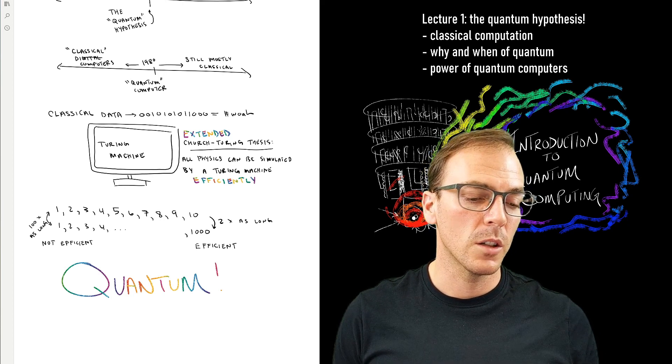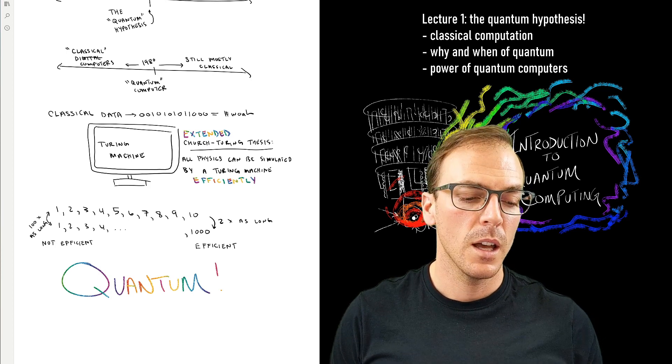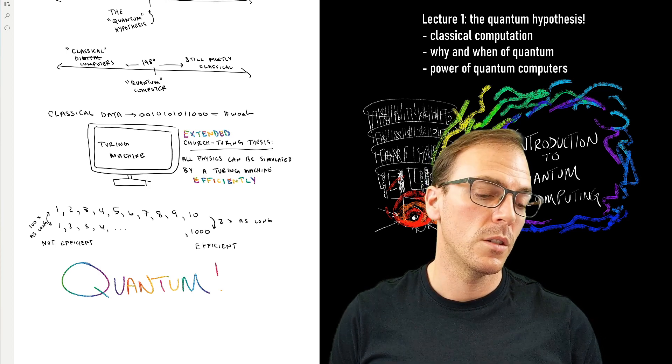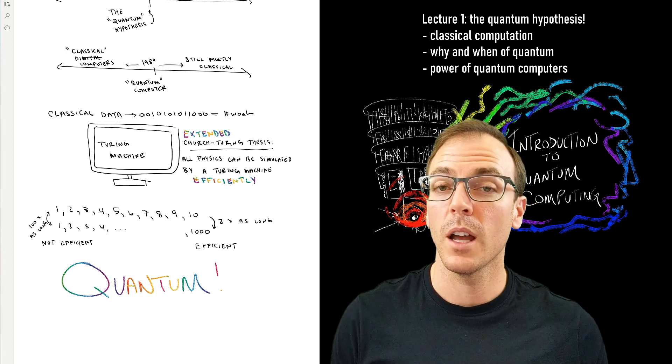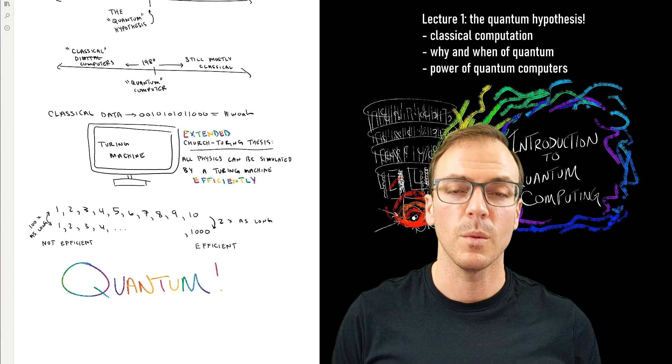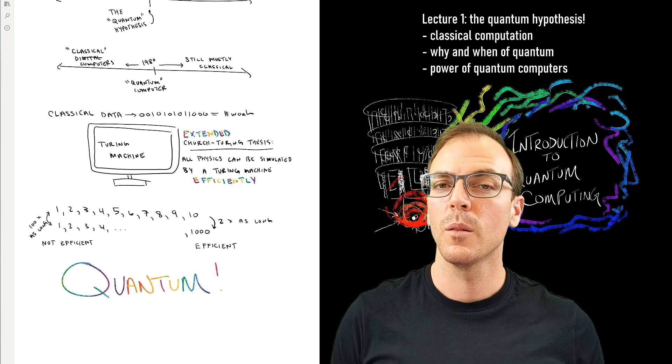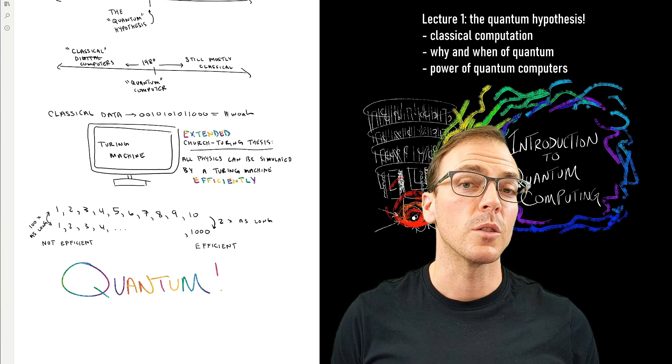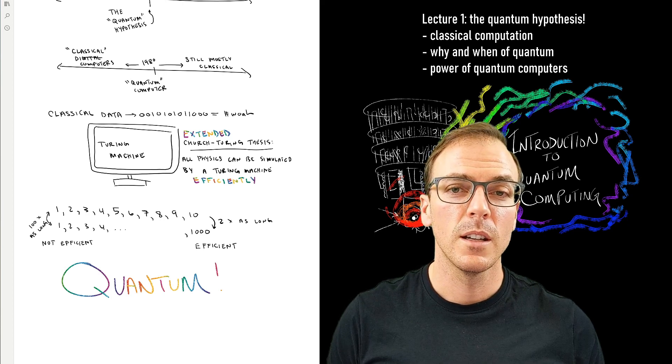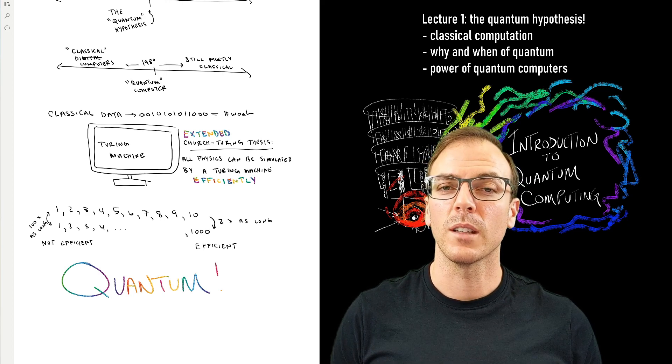Could the Extended Church-Turing thesis be wrong? Could, and if we don't, if a universal Turing machine can't simulate quantum physics, maybe we need to build or think about a new kind of machine. And that would be a universal quantum computer. And that's what we're going to get to next.